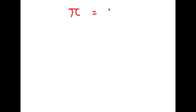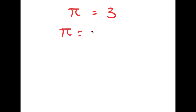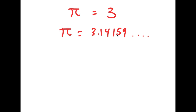In this video, I'm going to be proving that pi is equal to 3. As you probably already know, pi is an irrational number, meaning it doesn't have a whole number value — it's actually equal to 3.14159 and on and on forever. So that's why it's irrational. In this video, I'm going to be proving that pi is actually equal to 3 and not the irrational number we all know it is.